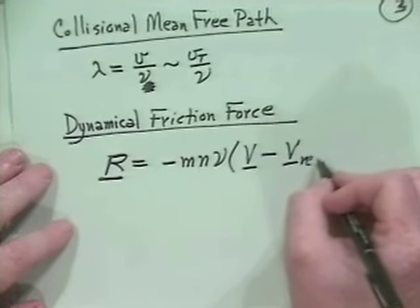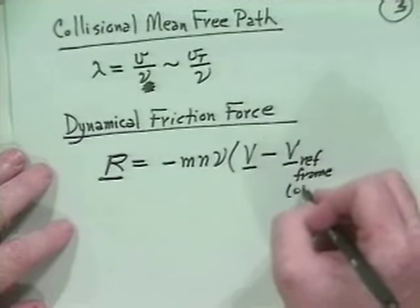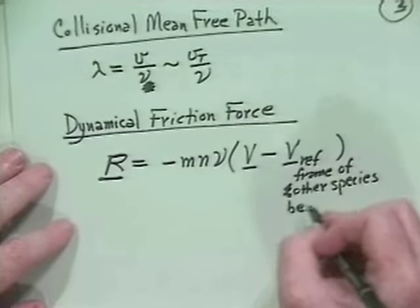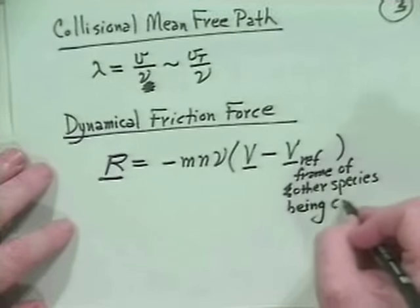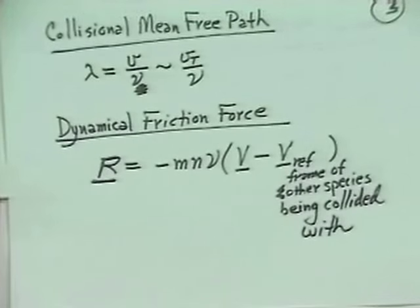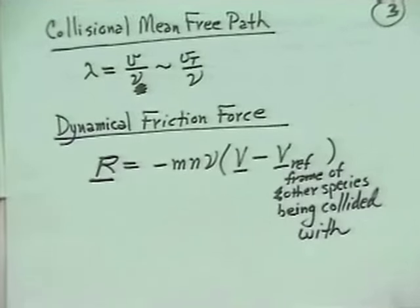Often we work in the ion rest frame, setting v_other to zero, so the friction force simplifies to R = −m*n*ν*v. This is phenomenological but also what comes out of a full kinetic theory calculation.